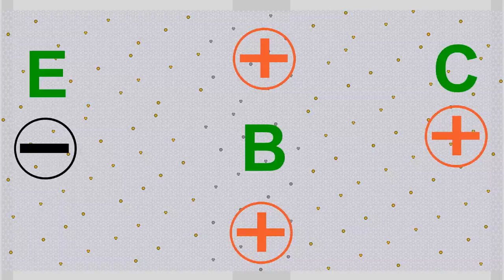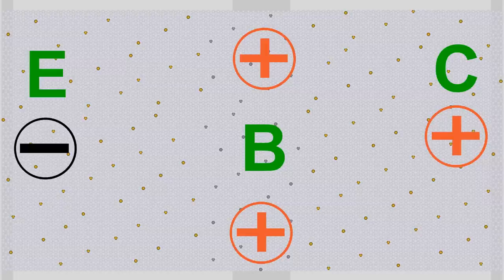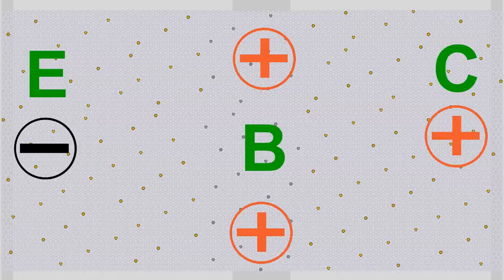The left area is called the emitter, because electrons are emitted from that layer while the transistor is operating. The electrons emitted at the left side of the device are collected by the positive terminal at the right side, which is why that area is called the collector. The middle layer is called the base, and it is used to control the flow of electrons through the device.